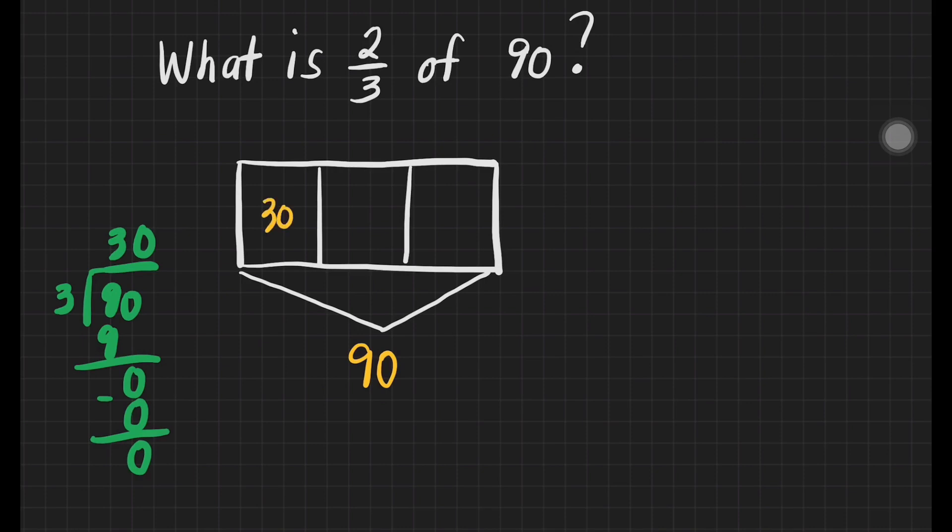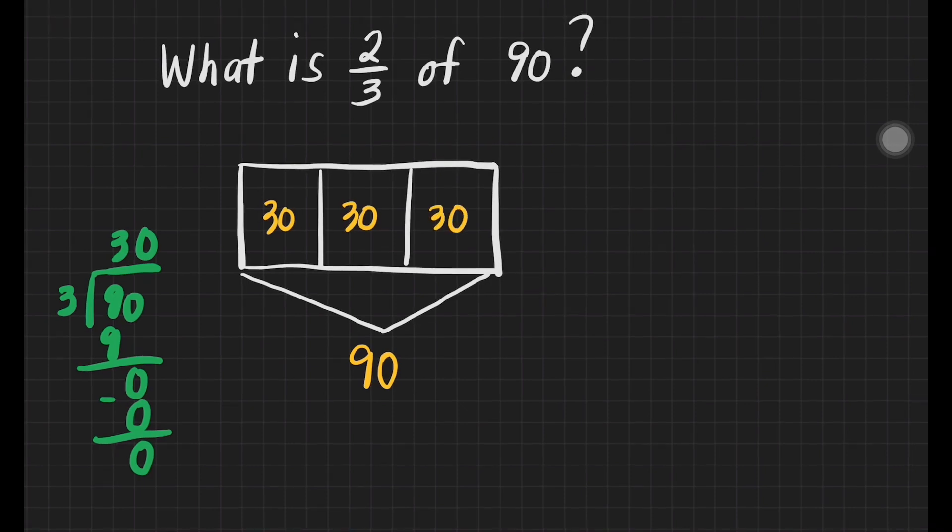In each box, we'll have 30. We'll write here 30, 30, and then 30. Based on this illustration, we can already answer two-thirds of 90. And that is 30 plus 30 is equal to 60. So our answer is 60. And that's it.